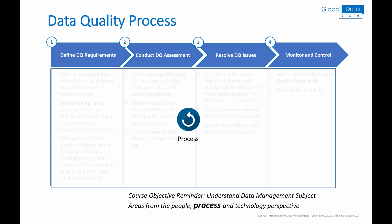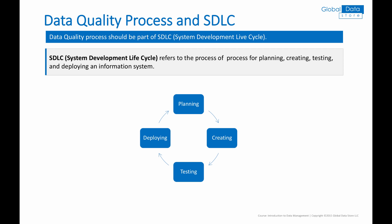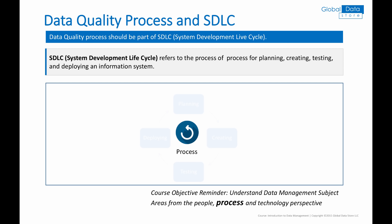A brief reminder about the course objective: to cover each capability from people, process, and technology aspects. This slide refers to the process aspect of data quality capability. Same as metadata management, the data quality process should be a part of the system development life cycle, or SDLC. SDLC refers to the process of planning, creating, testing, and deploying of an information system. In other words, during application design and development, you should ensure the quality of data in all application parts.